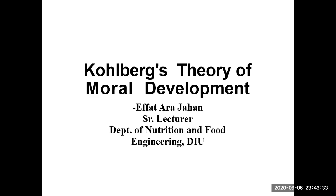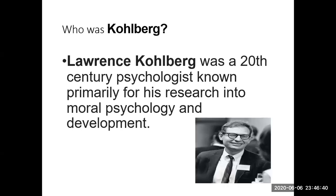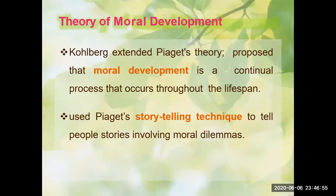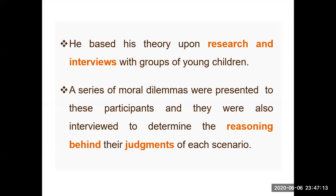Today we will read another theory called Kohlberg's theory of moral development. Kohlberg was a psychologist like Piaget and he also worked on moral development. His theory was actually an extended version of Piaget's theory, and he proposed that moral development is a continual process that occurs throughout the lifespan. He also used Piaget's storytelling technique, presenting stories involving different kinds of dilemmas, and conducted research and interviews to observe how people act at each stage.